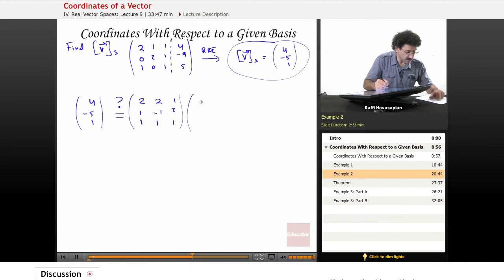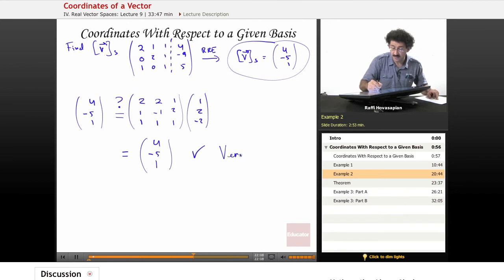1 times the coordinate vector with respect to, yes, as it turns out, when I do the multiplication on the right-hand side, I end up with 4, negative 5, 1. So yes, it is verified.